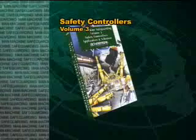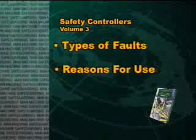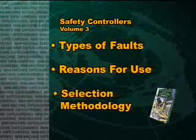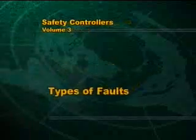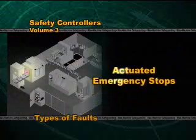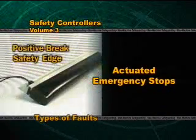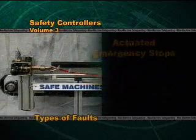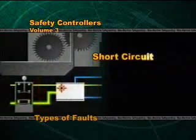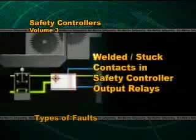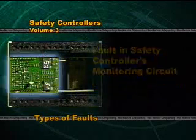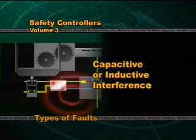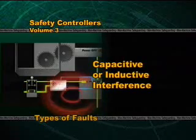Now let's explain the types of faults that a safety controller can detect and the reasons and applications where their use is recommended. We'll start by examining the types of faults that can occur in a safety system. These include open or misaligned machine guards; actuated emergency stops such as light curtains, pressure mats, safety edges, cable pull switches, or emergency stop stations; an open circuit; a short circuit; a short to ground; welded or stuck contacts in the safety controller's positive guided output relays; a fault in the safety controller's monitoring circuit; inadequate supply voltage; and capacitive or inductive interference on the safety controller's inputs or supply voltage.